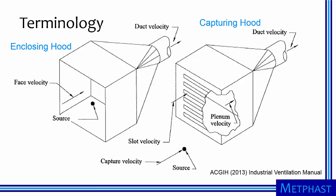A few terms are needed before starting. We've already introduced duct velocity, which when multiplied by duct area gives us air flow. As shown at left, the source is fully or partially enclosed in an enclosing hood. Typically, the face velocity is specified for these hoods to ensure contaminants from the source do not enter the workplace. As shown at right, the source is located outside of a capturing hood. In this case, the velocity of the air at the source, referred to as the capture velocity, must be sufficiently high to pull the contaminant into the hood. Oftentimes, capturing hoods use slots to ensure adequate capture velocity across a wide area. If so, the velocity of air entering the slot — the slot velocity — and the velocity downstream of the slot — the plenum velocity — are usually specified.